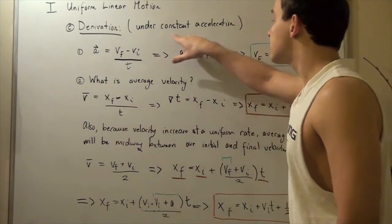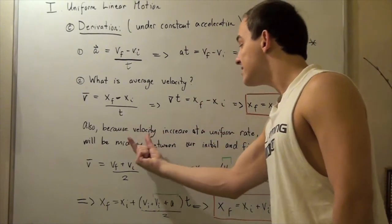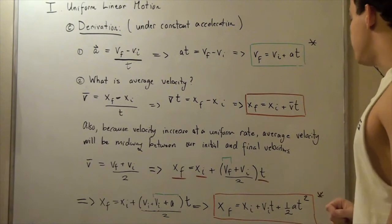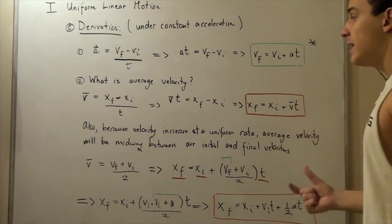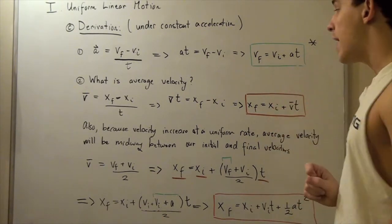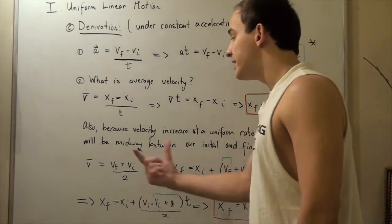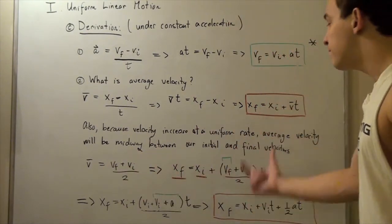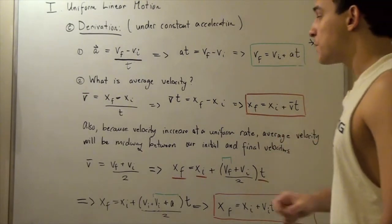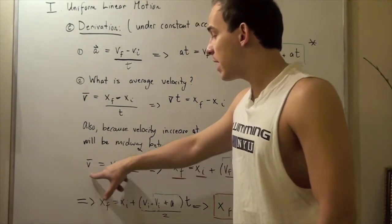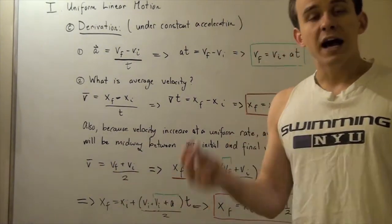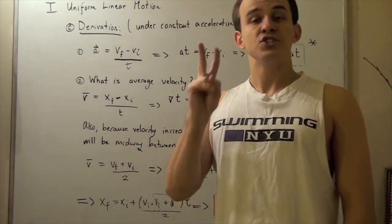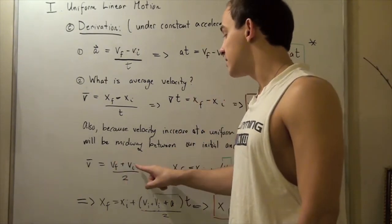Because of constant acceleration, our velocity increases at a uniform rate. That means our average velocity can be expressed as the velocity midway between our initial and final velocities — that is, average velocity equals v final plus v initial divided by 2.